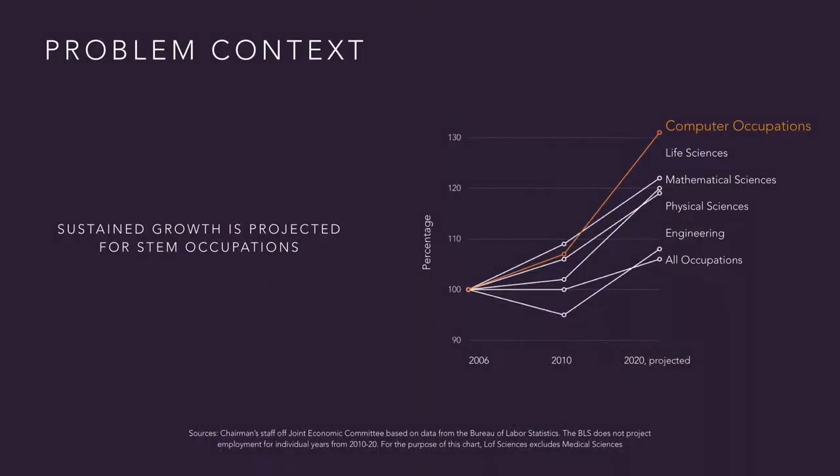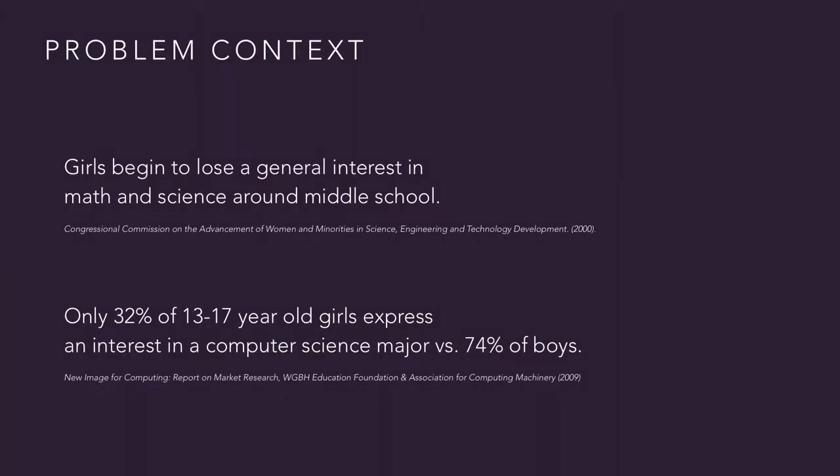So why are women not entering the field? Research has shown that women tend to lose interest in math and science subjects very early on. By the time girls hit middle school, the majority of them have already lost interest in computer science as a college degree. So what we aim to do is intervene very early on, even before they lose this interest. The target audience we chose to focus on is elementary school girls.